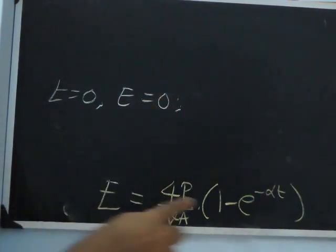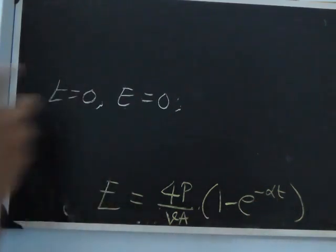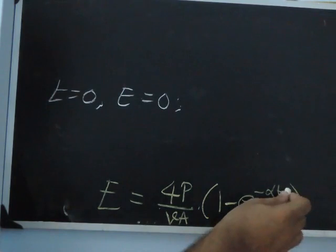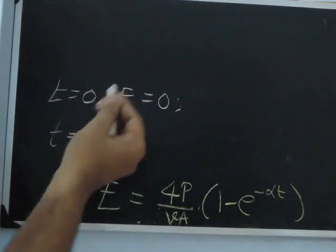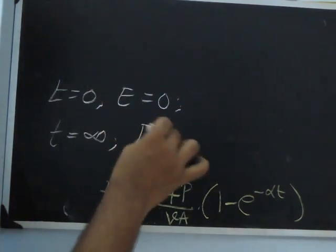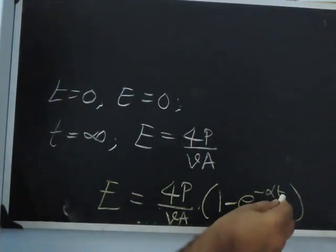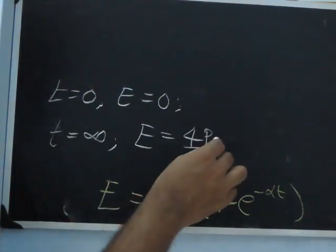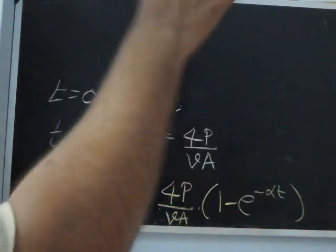This is the growth equation — it tells us how the energy density of the room increases with time. Initially when T equals 0, energy is 0, because e^0 is 1 and 1 minus 1 equals 0. If you allow time to go to infinity, e^(-∞) becomes 0, so E approaches 4P by VA. So when time goes to infinity, the energy will be 4P by VA, where P is the power of the source, c is the velocity of sound, and A is the total absorption in the room.